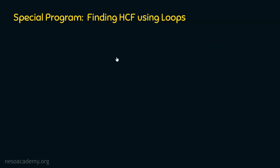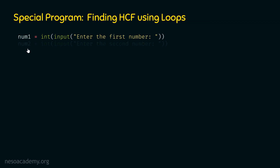First, we will ask the user to enter the numbers. We will ask two numbers from the user and store them individually in two different variables. The first variable is num1: num1 = int(input('Enter the first number')). This prompt will be displayed on the screen. User will provide the first number, and that number will be stored in num1. For the second number, num2 = int(input('Enter the second number')). After execution of these two lines, num1 and num2 will point to the first and second numbers entered by the user respectively.